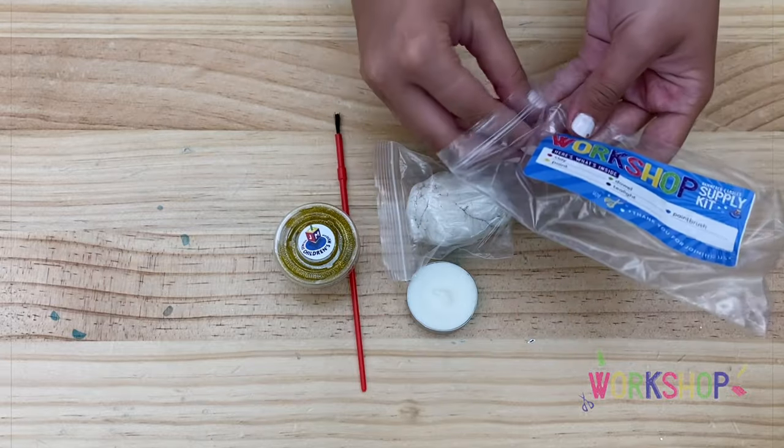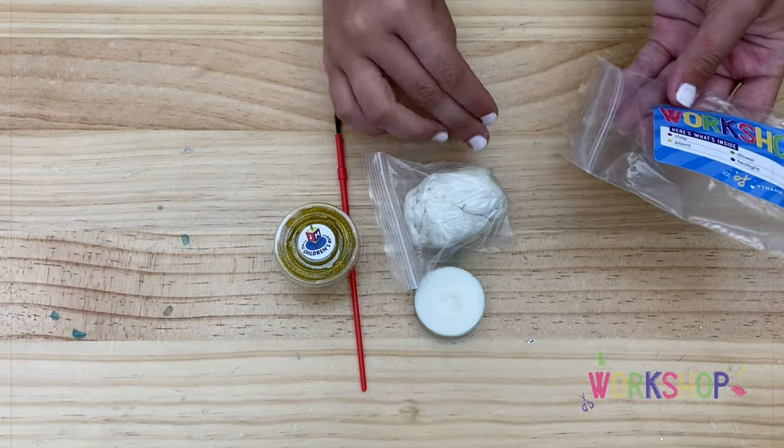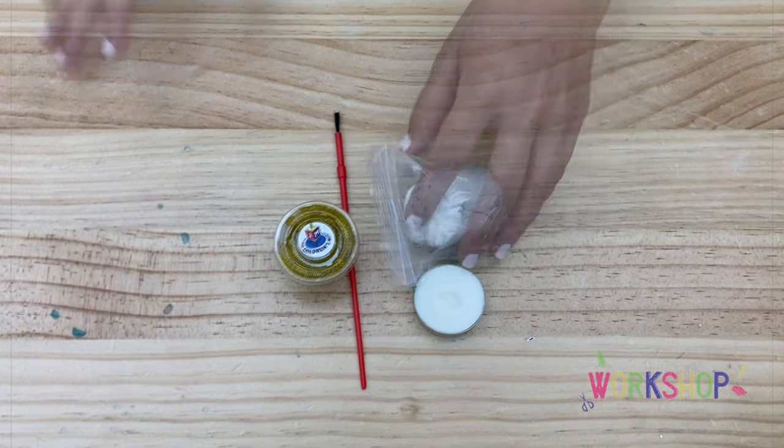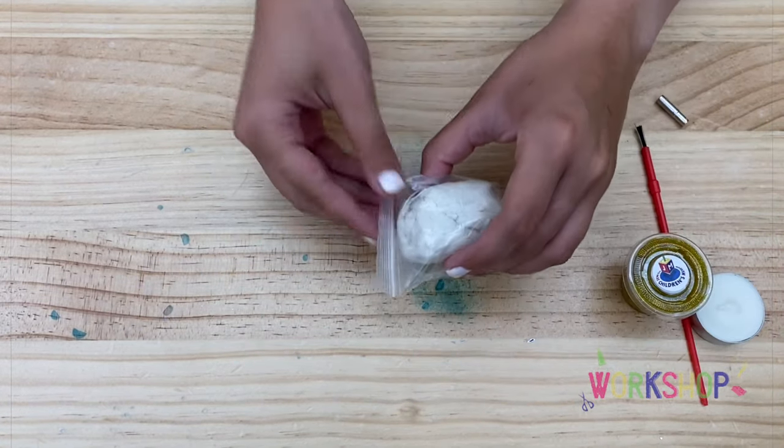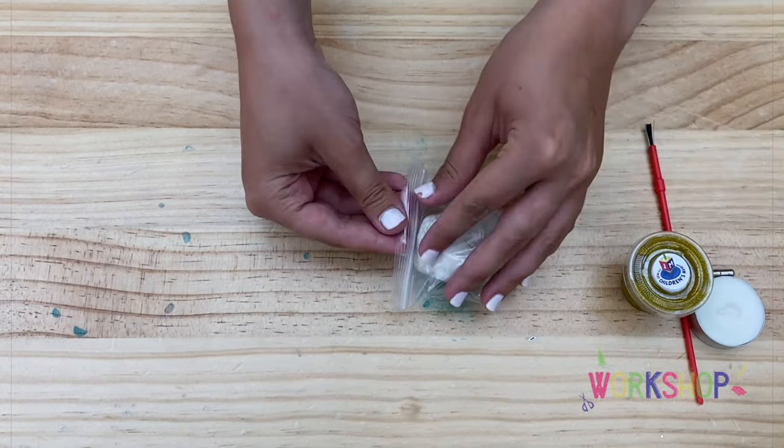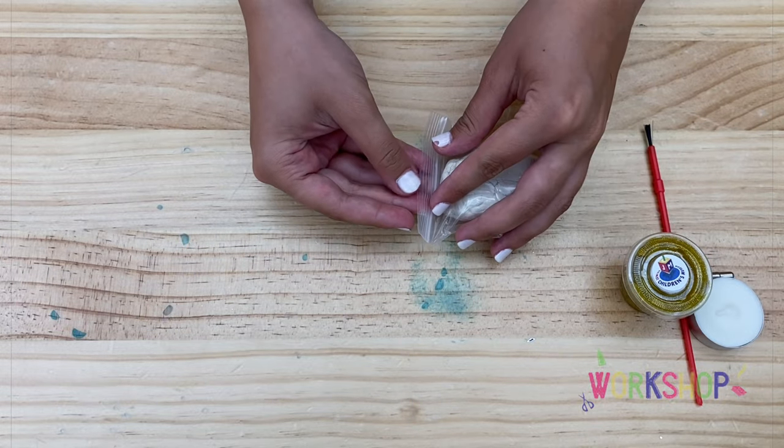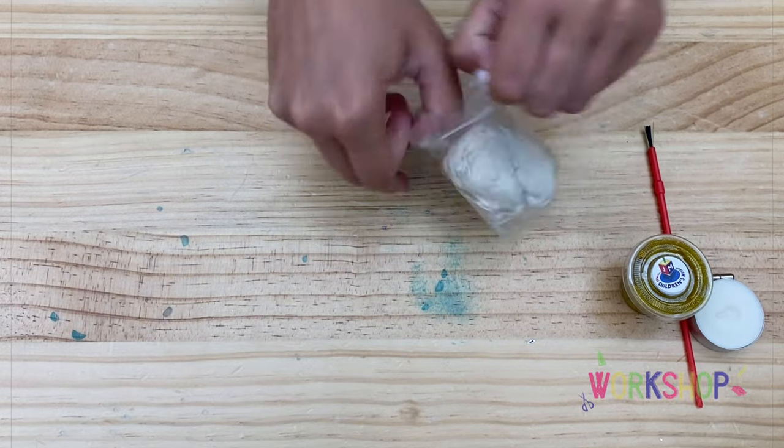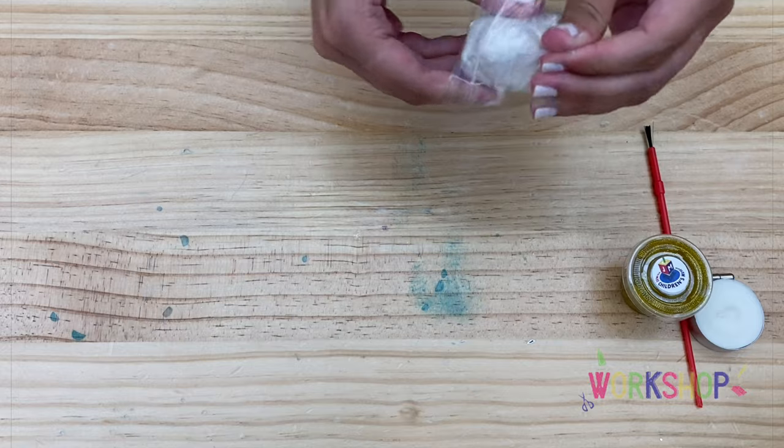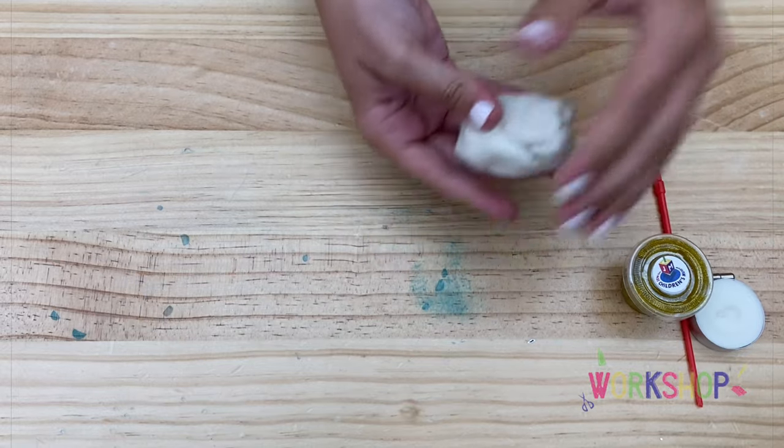Let's get started. Roll the clay into a ball. If it feels very thick and difficult to work with, you may add a little bit of water. Alternatively, just keep working with it, and the more you do so, the heat of your hands will begin to soften it.